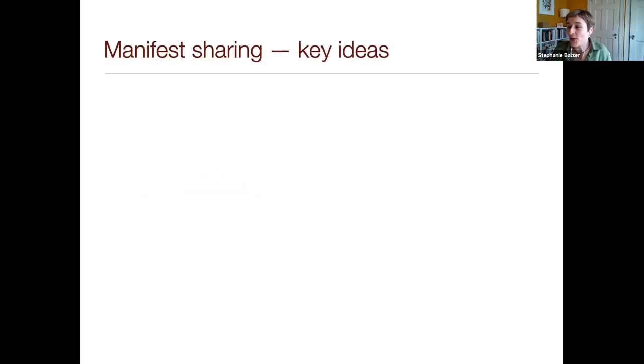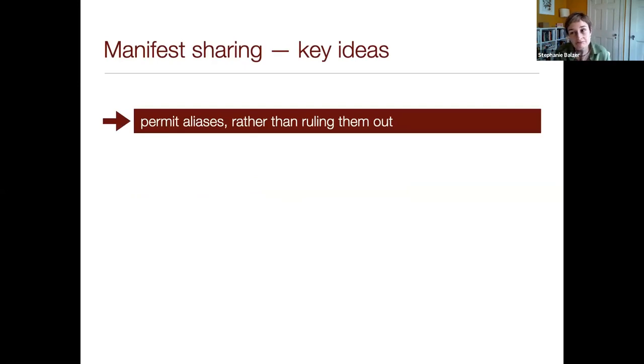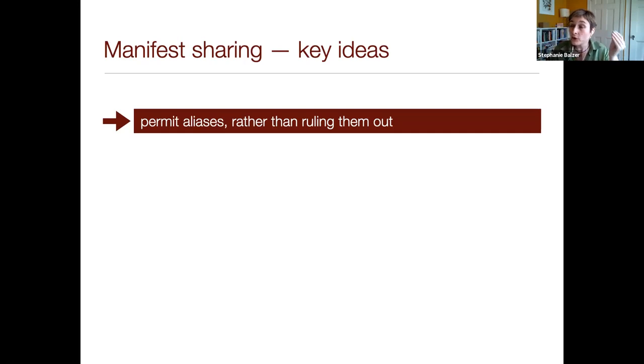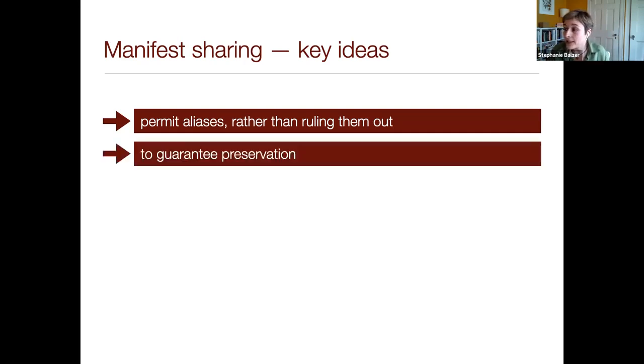Now fasten your seatbelts — we get a little bit chaotic. In the system I'm introducing now, we will have the possibility to create those cycles. So what are the key ideas of manifest sharing? If we rule out aliases it's wonderful — we get good guarantees — but it might be too limiting. So we do permit aliases, but we make sure we control aliasing. As a result, we are able to guarantee preservation.